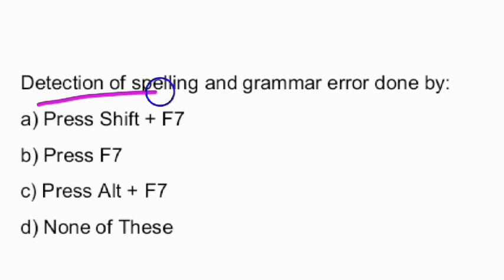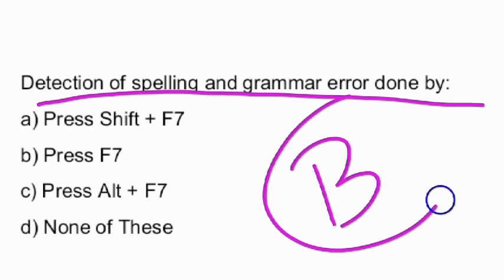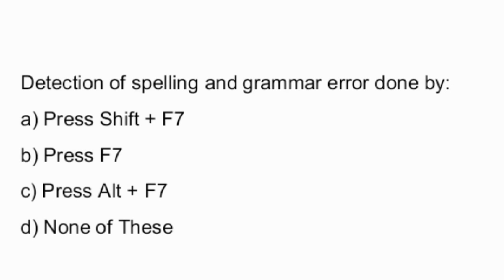Next question: detection of spelling and grammar errors is done by pressing the F7 key — option B is the right answer.